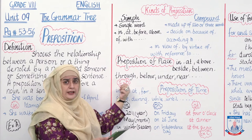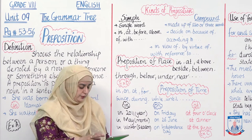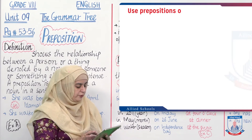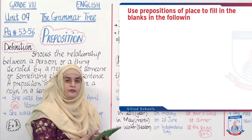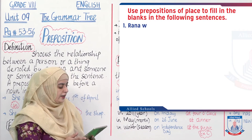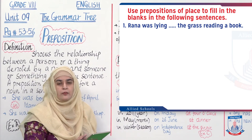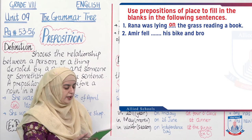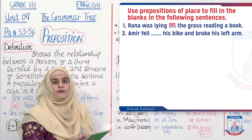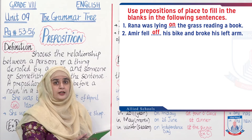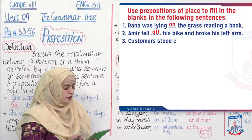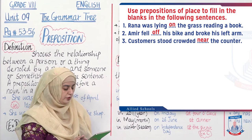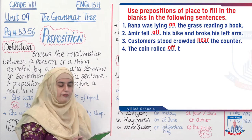Is ki reinforcement Exercise B ke zariye hai. Exercise B is asking you to use prepositions of place to fill in the blanks. Rana was lying on the grass, reading a book. Amir fell off his bike and broke his left arm. Customers stood crowded near the counter. The coin rolled off the table.